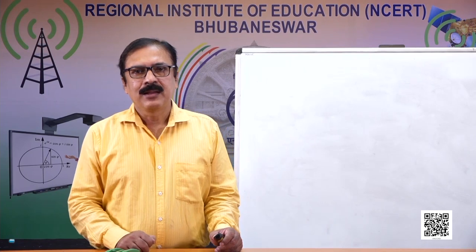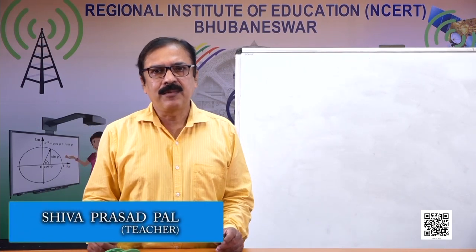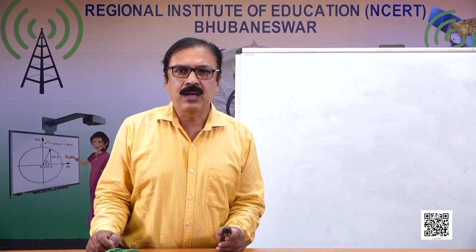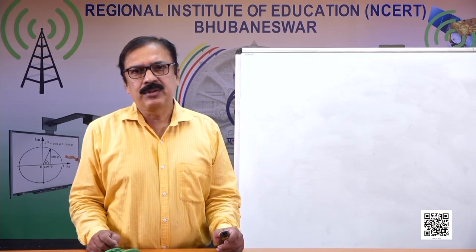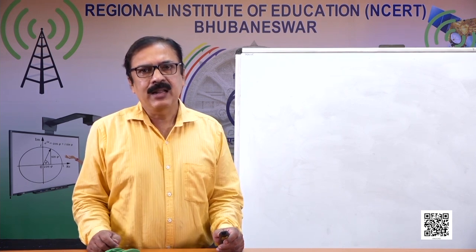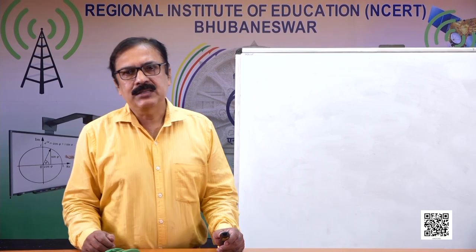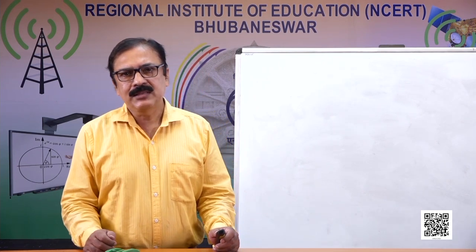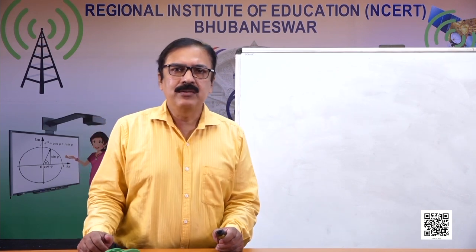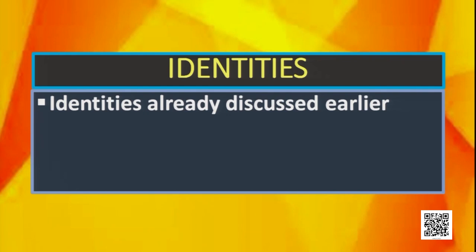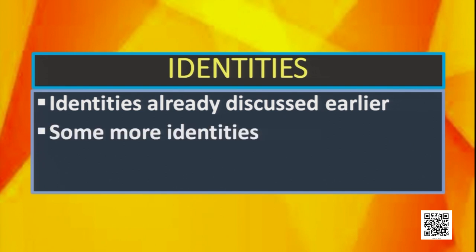Welcome students. Earlier we discussed polynomials, in which we discussed the factor theorem. In factor theorem, we substitute the value of X and by getting the polynomial value as zero, we could find the factors of the polynomial. Now in this session we will discuss some identities — some already discussed in previous classes, and some new ones, along with their applications.